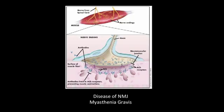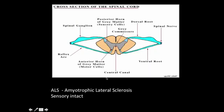In myasthenia gravis, the patient has antibodies to the acetylcholine receptor. Although the nerve signal is normal, the damaged junction means contraction will not occur, causing weakness. Next is the anterior horn cell. A great example is amyotrophic lateral sclerosis (ALS), where the patient has motor weakness with sensory intact, and gradually develops paralysis throughout the body. Unfortunately, these patients don't do well.